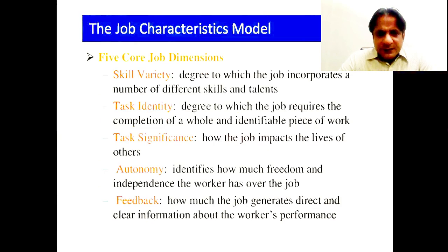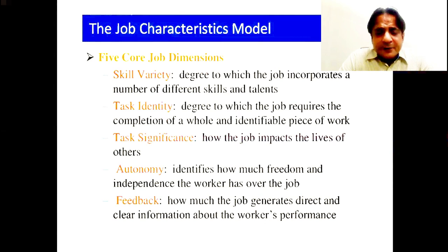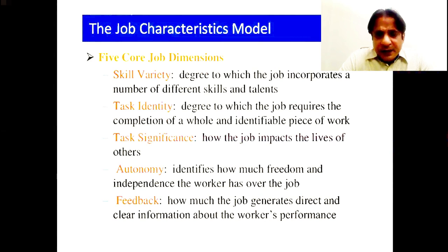In the job characteristics model, there are five key dimensions: skill variety, task identity, task significance, autonomy, and feedback. Skill variety means the degree to which a job incorporates a number of different skills and talents. Any employee working within a department should have a variety of tasks where he uses his multi-skills — writing skills, communication skills, analytical skills, conceptual skills — while doing his job.